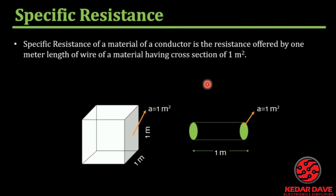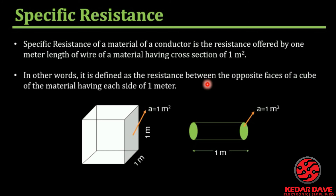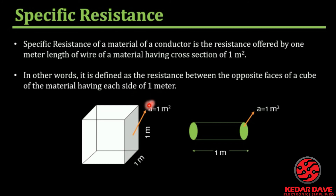Specific resistance is also defined as the resistance between the opposite faces of a cube of the material having each side of one meter.